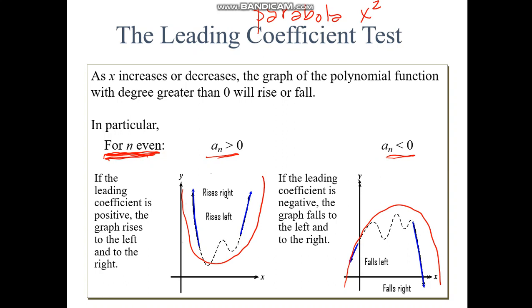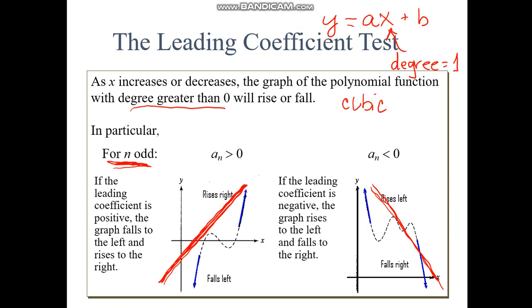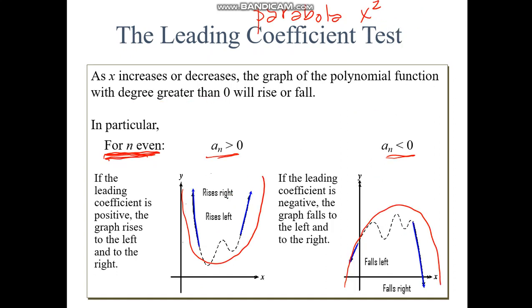So for an even degree, we're going to have something concave up or concave down. For an odd degree, we're going to have something that falls left, rises right, or rises left, falls right. So this is odd, and this is even.